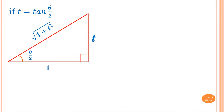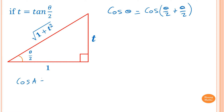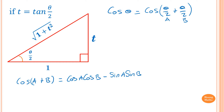Now let's work out cos(θ) in terms of t. cos(θ) equals cos(θ/2 + θ/2). From the trig identity, cos(a+b) equals cos(a)cos(b) minus sin(a)sin(b), where a = b = θ/2.